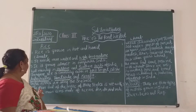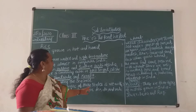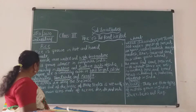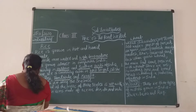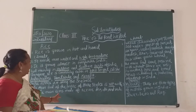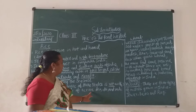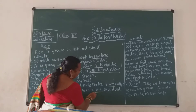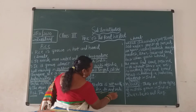The main food of the people of these states is rice with fish. What is the main food, children? The main food of the people of these states is rice and fish.